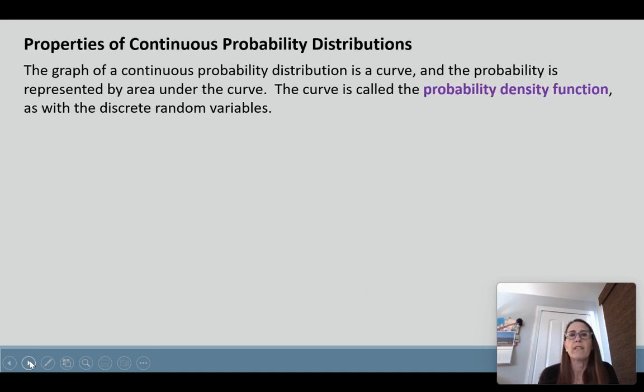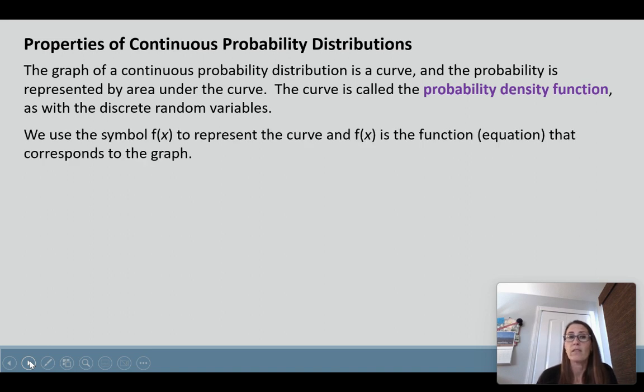Properties of continuous probability distributions: the graph of a continuous probability distribution is a curve, and the probability is represented by the area underneath that curve. The curve is called the probability density function, just like with discrete random variables. We use the symbol f(x) to represent the curve, and f(x) is the function, which basically means equation, that corresponds to the shape of the graph.